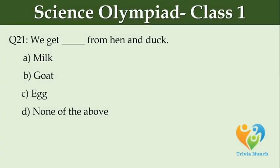We get dash from hen and duck. Option A: Milk. Option B: Coat. Option C: Eggs. Option D: None of the above.